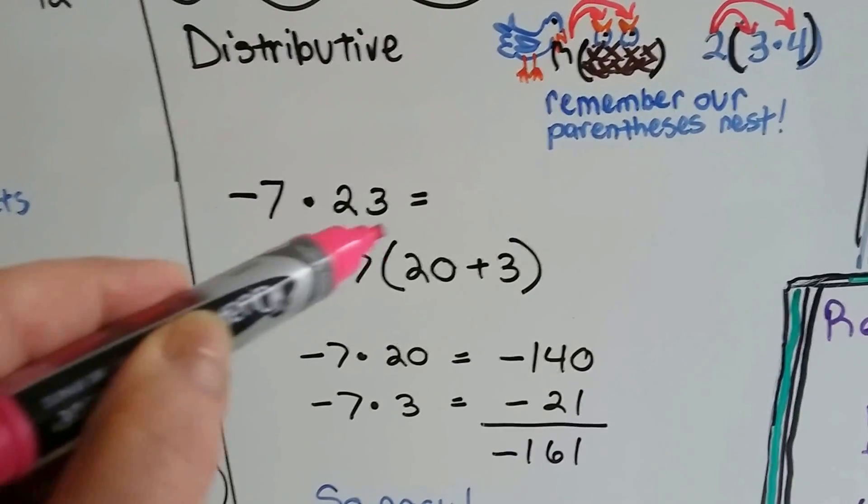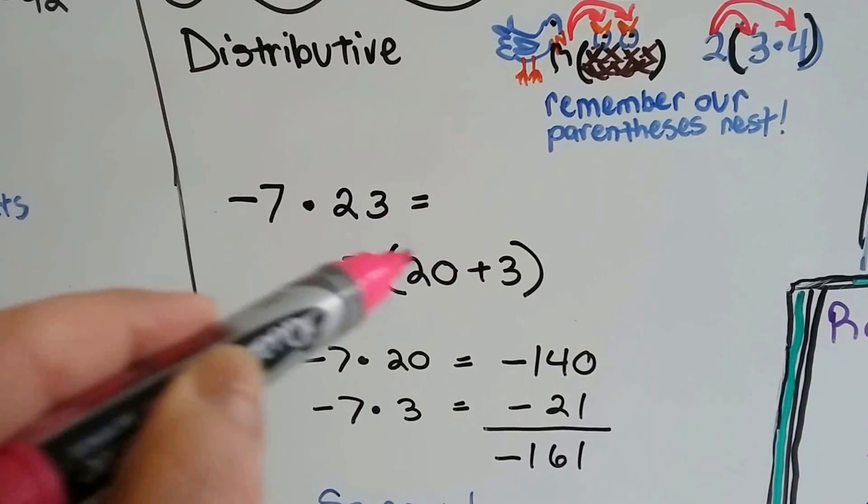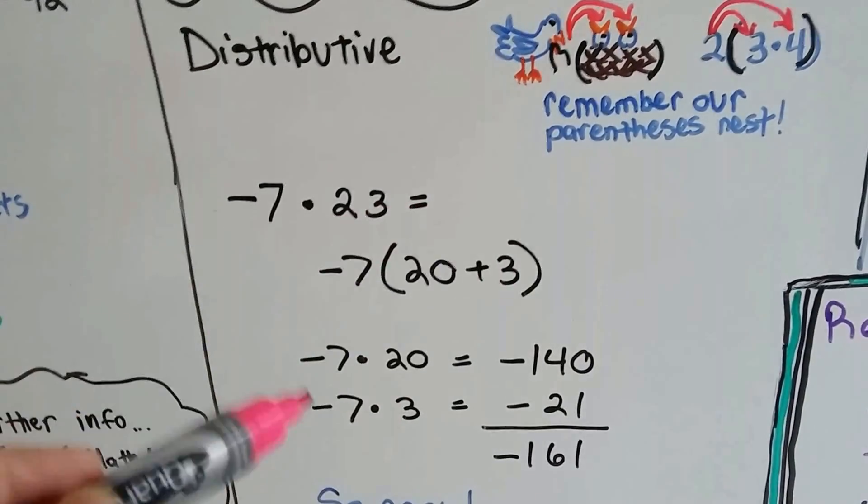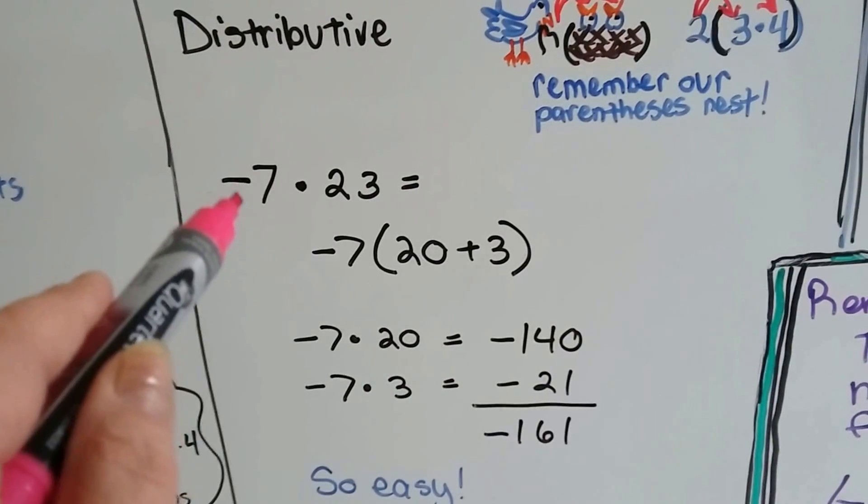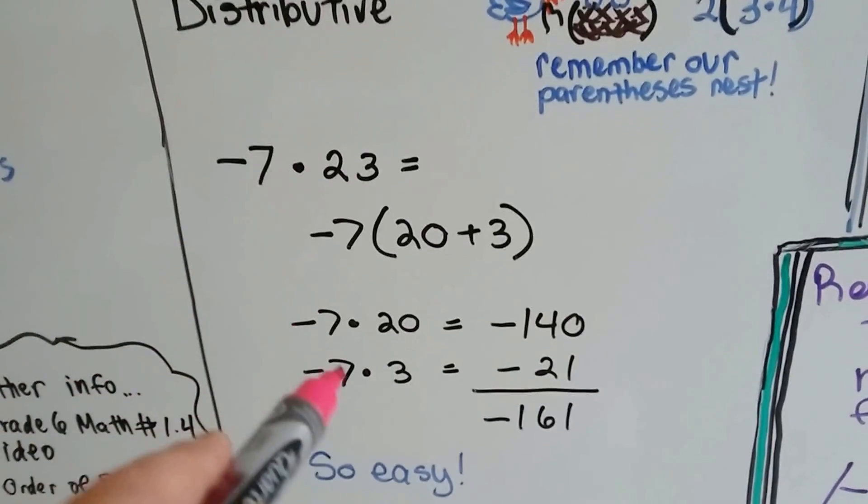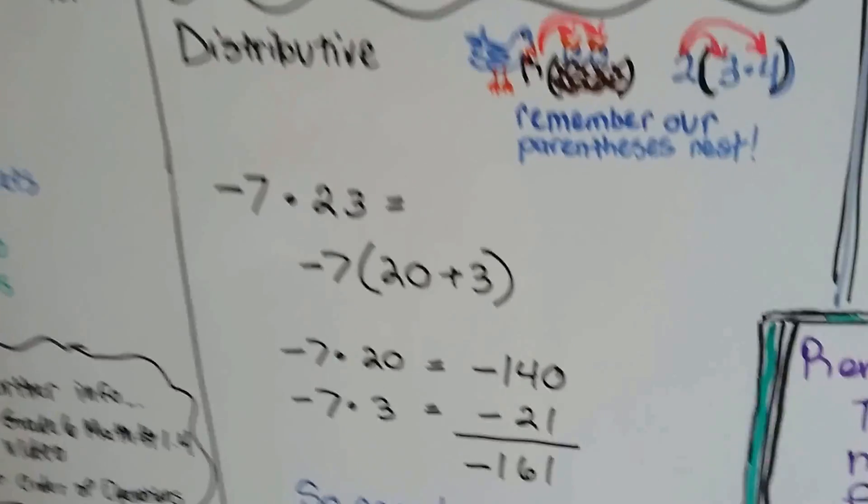So, when we break it apart like this, we're using the distributive property, like our parentheses nest and our mother bird. We add them together and we get negative 161. That was easy. Who would have thought we would have been able to do negative 7 times 23 so quickly?